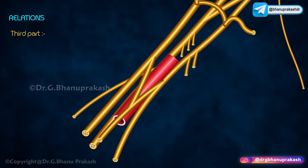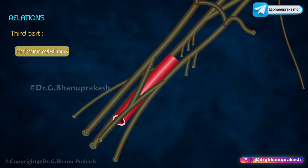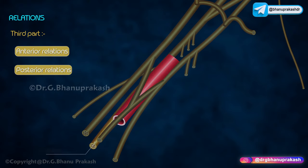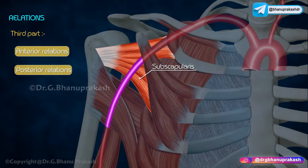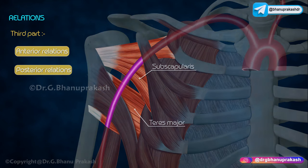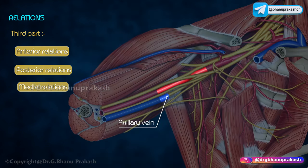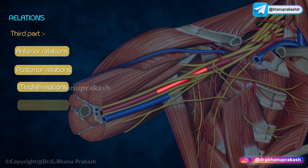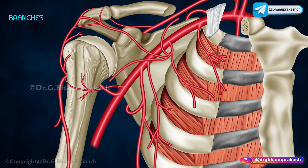The third part is related anteriorly to the medial root of the median nerve, posteriorly to the radial nerve, axillary nerve, subscapularis in the upper part, and teres major in the lower part. Medially lie the axillary vein, medial cutaneous nerve of the arm, and ulnar nerve. Laterally lies the musculocutaneous nerve.